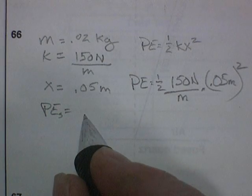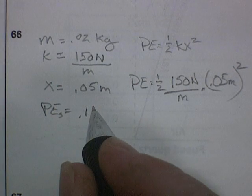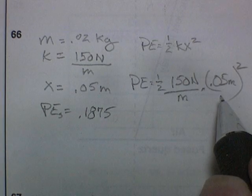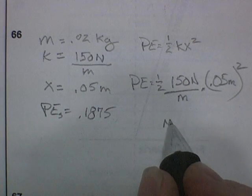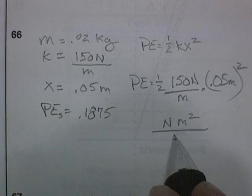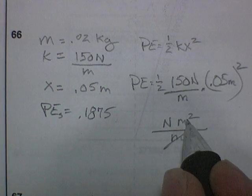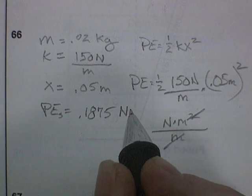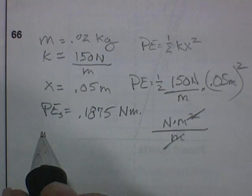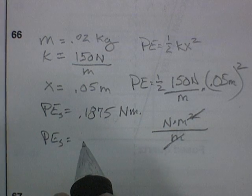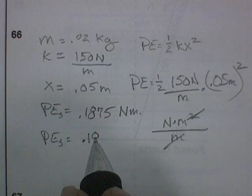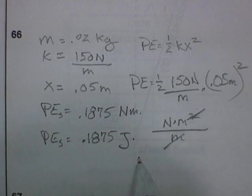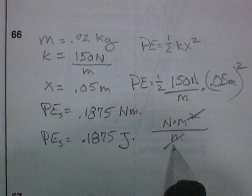Potential energy is 0.1875. Now for the units. So I'm going to have newton meters squared per meter. So newton meters. Now I could leave it as newton meters, and that would be acceptable. But I happen to remember that energy, units of energy, are joules. 0.1875 joules. Keep in mind, if you don't remember that, newton meters is perfectly acceptable.